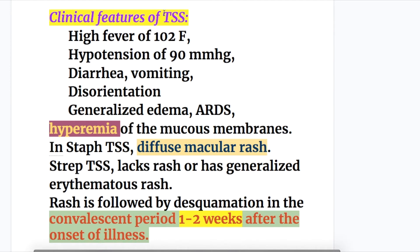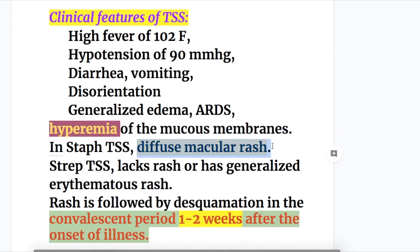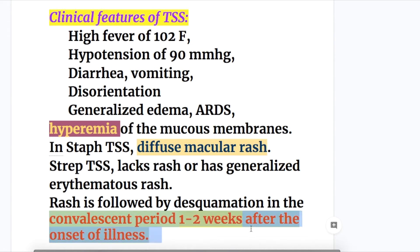The clinical features of toxic shock syndrome include high fever of 102°F, hypotension of 90 mmHg, diarrhea, vomiting, and disorientation. There is generalized edema, acute respiratory distress syndrome, and hyperemia of the mucous membranes. In Staph TSS there is a diffuse macular rash, whereas streptococcal TSS lacks a rash or has a generalized erythematous rash. The rash in both cases is followed by desquamation in the convalescent period, one to two weeks after the onset of illness.